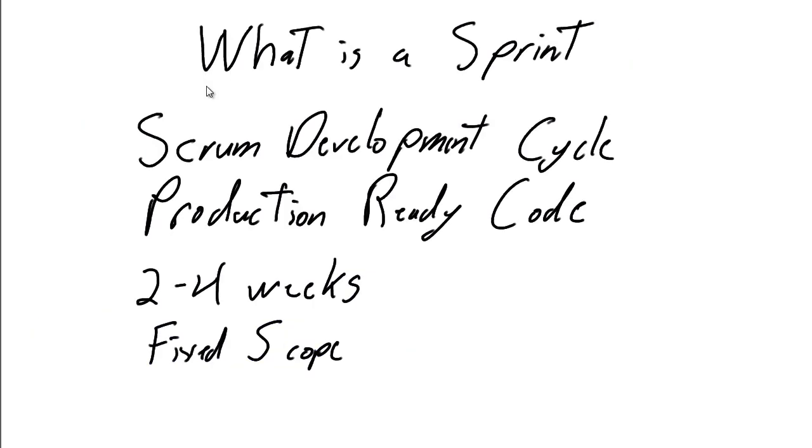In Scrum, all development, all work is done in something called a Sprint. A Sprint is, in the most simplistic form, the Scrum development cycle. At the end of each Scrum Sprint, we have production-ready code, and that's the key focus of what a Sprint is all about.